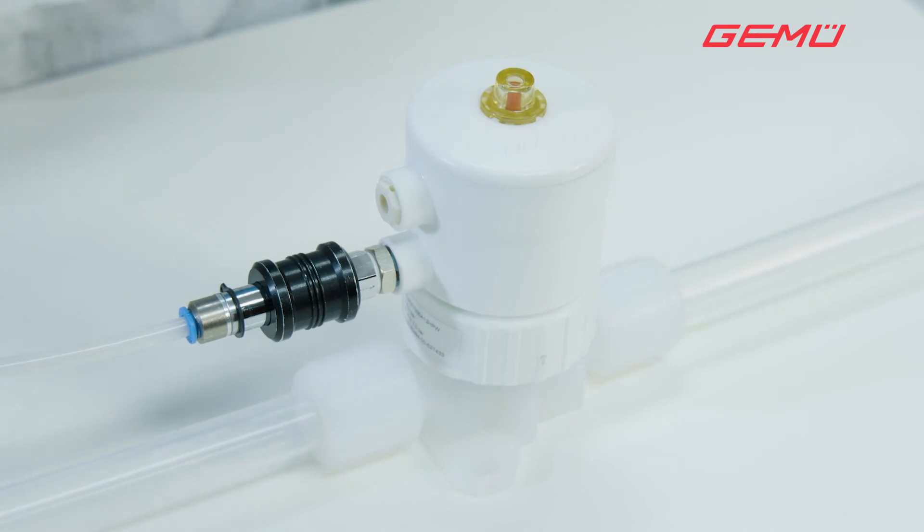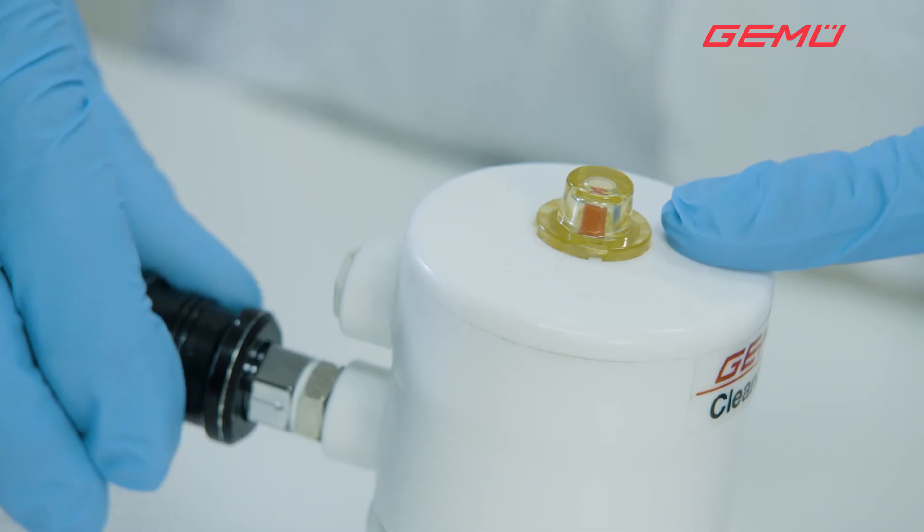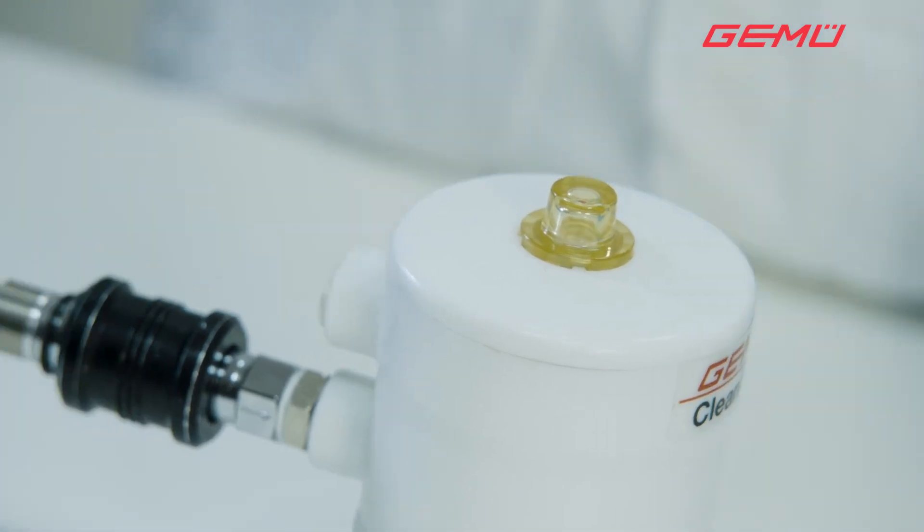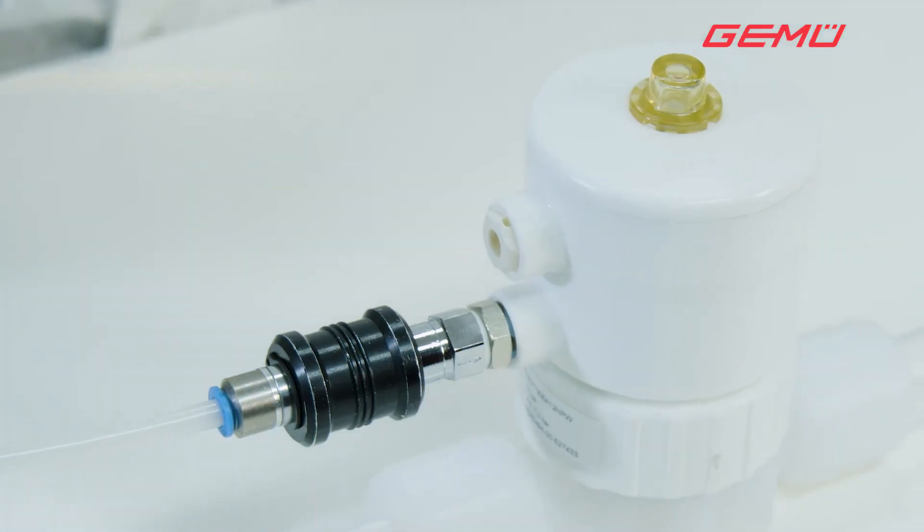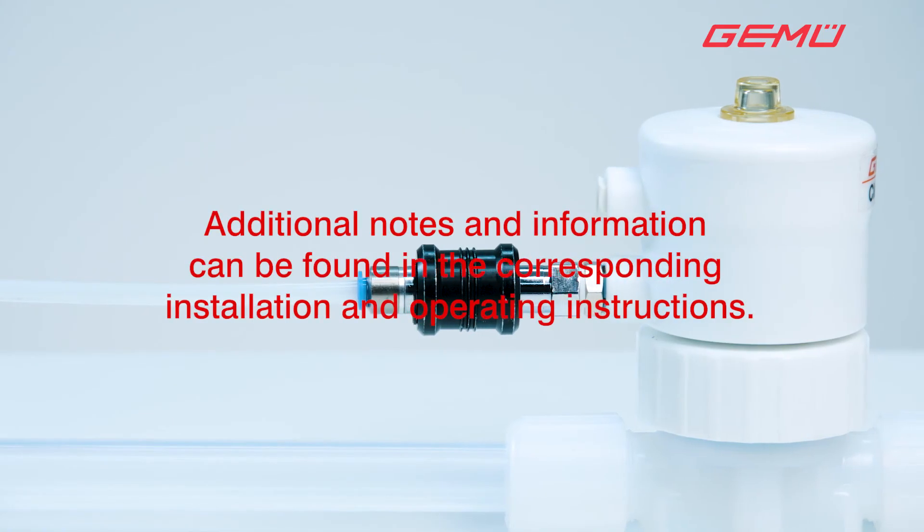Finally, move the valve to the closed position. The diaphragm replacement is now complete. Check the valve after one week and re-tighten the central nut if necessary.